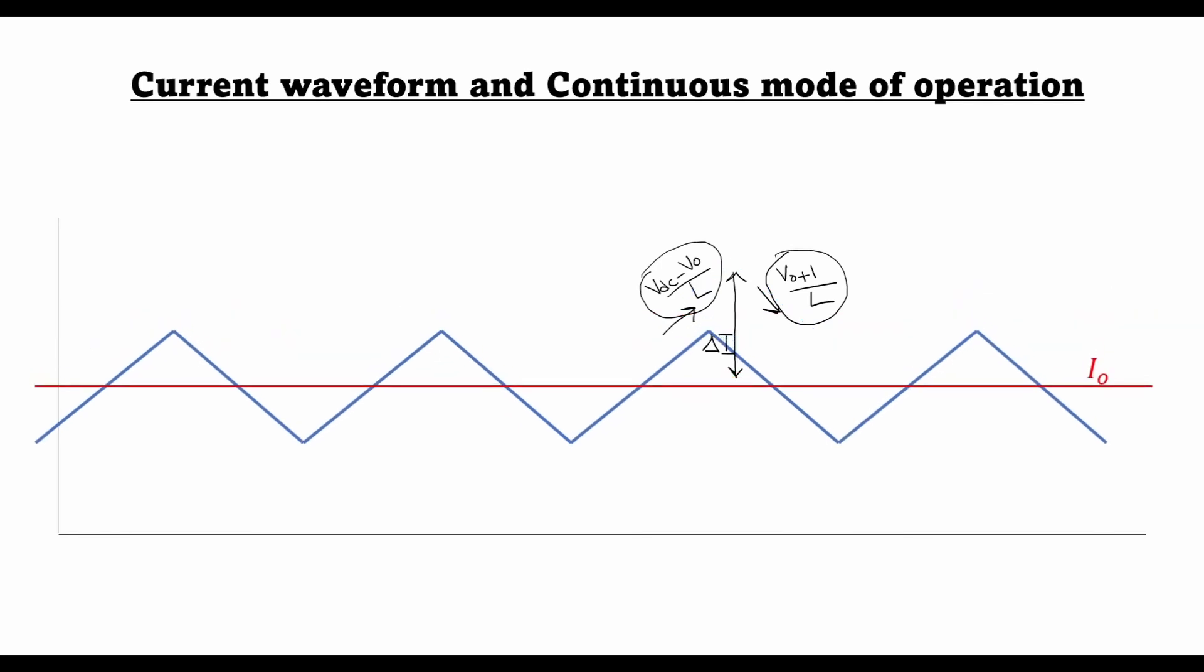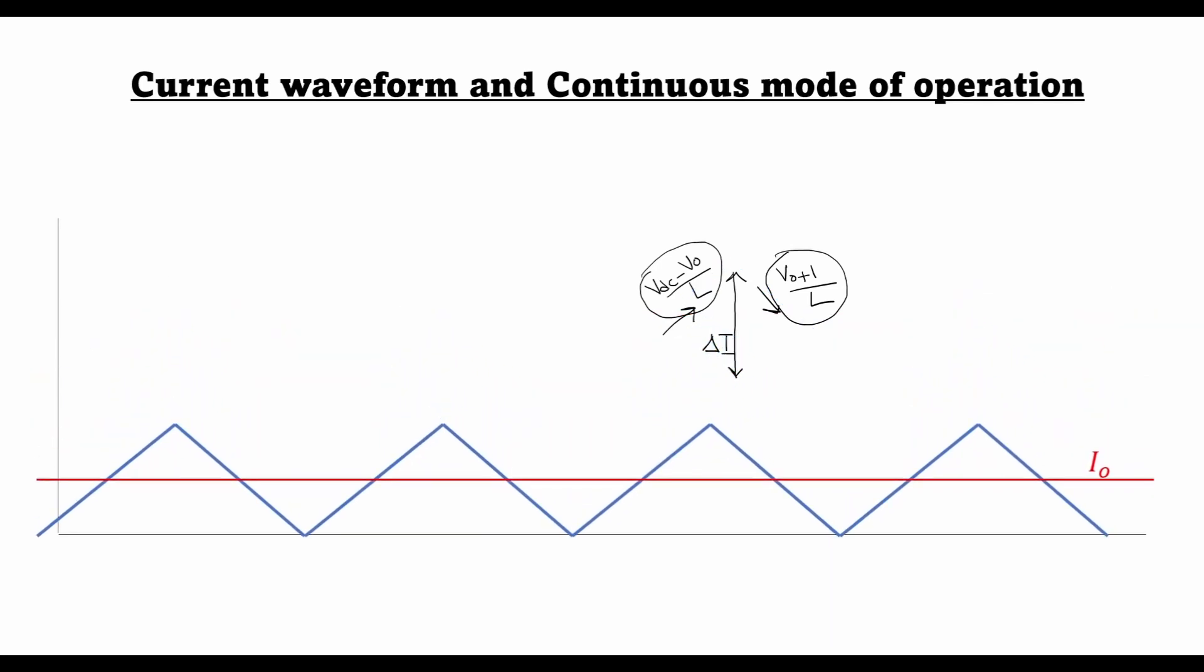then this curve would move like this, and when this point reaches zero, the lowest point of this current ripple, the output current at this point is called the critical load current.